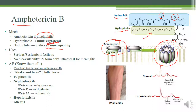Amphotericin is reserved for very serious systemic infections. It has zero oral bioavailability — it cannot be absorbed orally, so it must be given IV. For CNS infections, it must be given intrathecally via lumbar puncture. Many call it 'ampho-terrible' because it may bind cholesterol in human cells, since ergosterol and cholesterol are similar, causing many adverse effects.